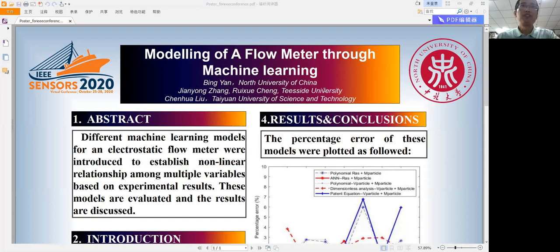Different machine learning models for an electrostatic flow meter were introduced to establish non-linear relationships among multiple variables based on experimental results. These models are evaluated and the results are discussed.